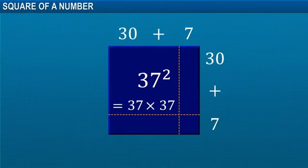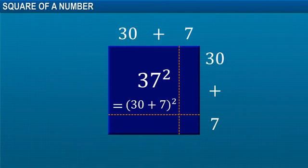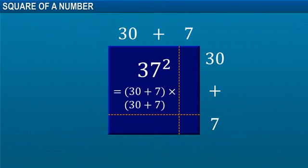So, 37 square is equal to 30 plus 7 whole square. This can be written as 30 plus 7 into 30 plus 7.